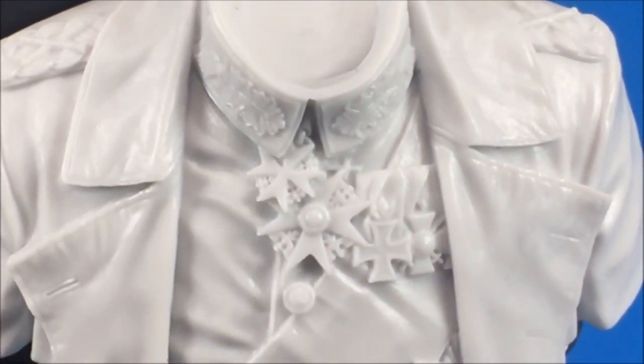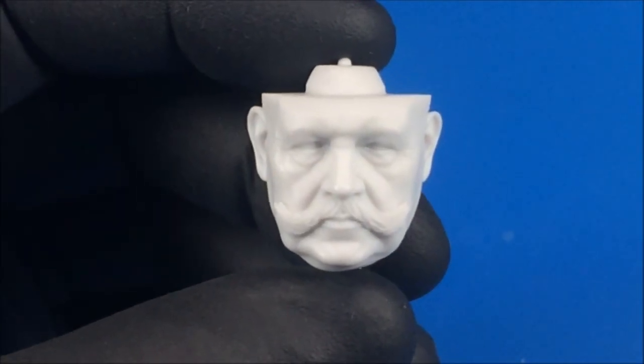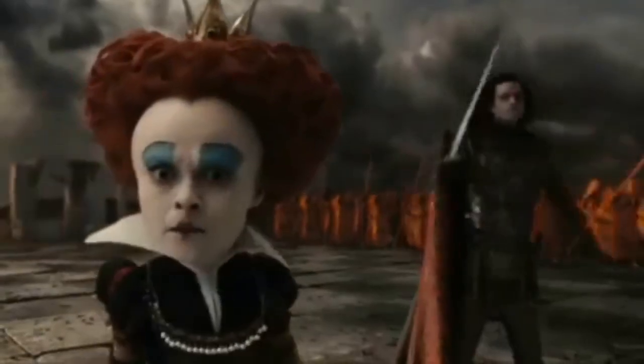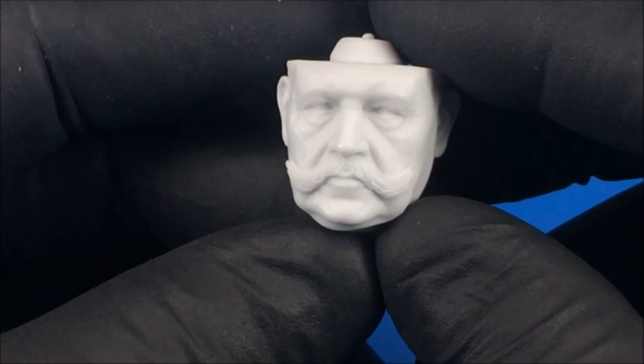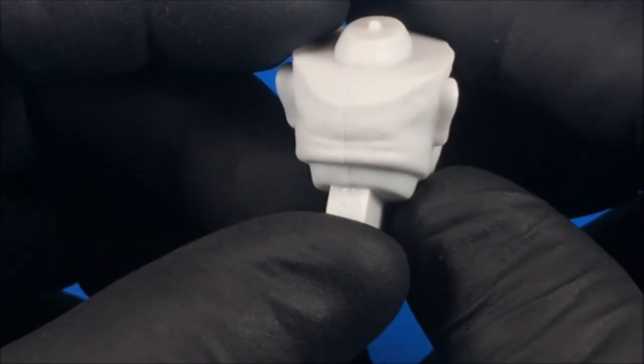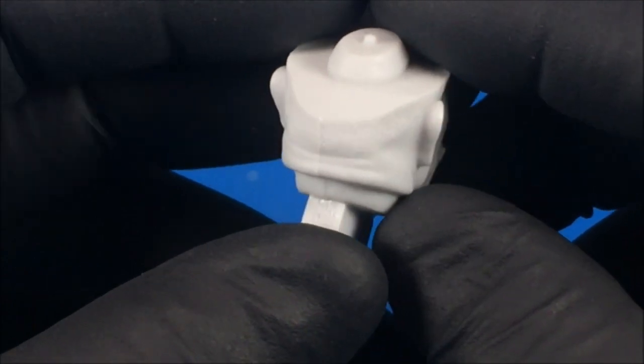So, the next part we'll look at is the head itself of Paul von Hindenburg. Sounds a little nasty. Oh, look at that! You can see the likeness is bang on, in my opinion. All the detail is showing, you know, his age are sculpted into the face.